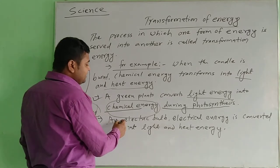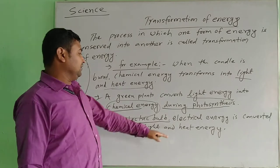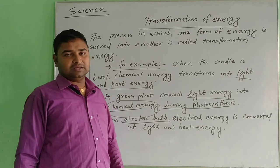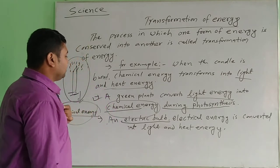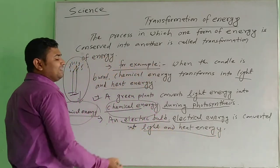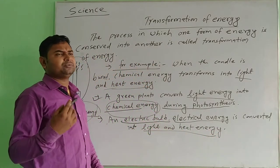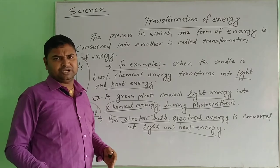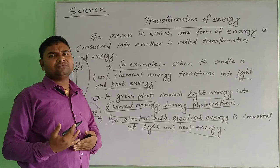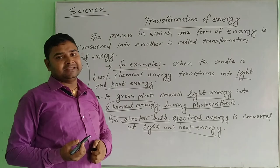Another example: in an electric bulb, electrical energy is converted into light and heat energy. The electric bulb converts electrical energy into heat and light energy. There are several examples of the transformation of energy — the process of transfer of energy from one form to another form — that is known as transformation of energy.